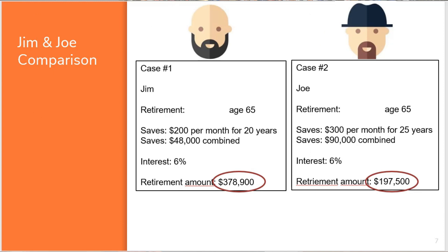The message here is clear: you need to start investing now, no matter if you're 15, 25, or 55. Today is better than tomorrow — time will help you get wealthier and wealthier over time. What if we could get 8% instead of 6%? With the same setup, Jim ends up with $752,000 and Joe only $263,000.